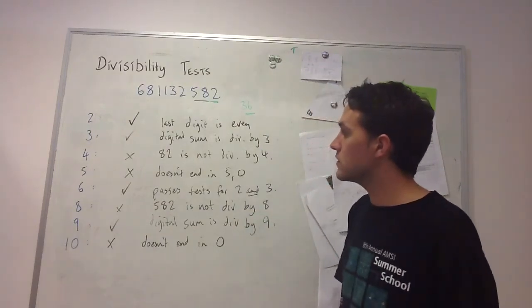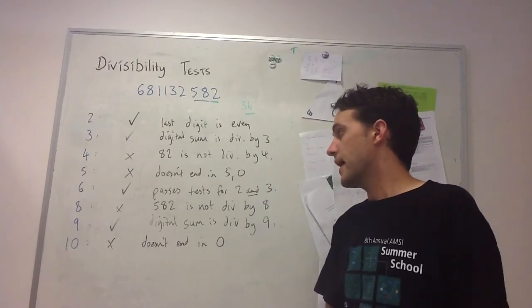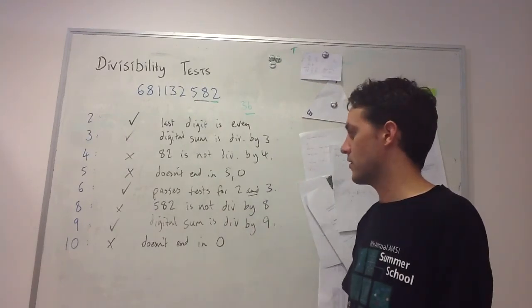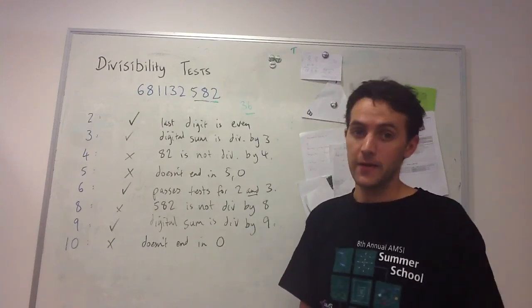We've worked through all the divisibility tests up to 10. We haven't included 7 because the test for 7 takes as long as long division, but you might want to look that up.